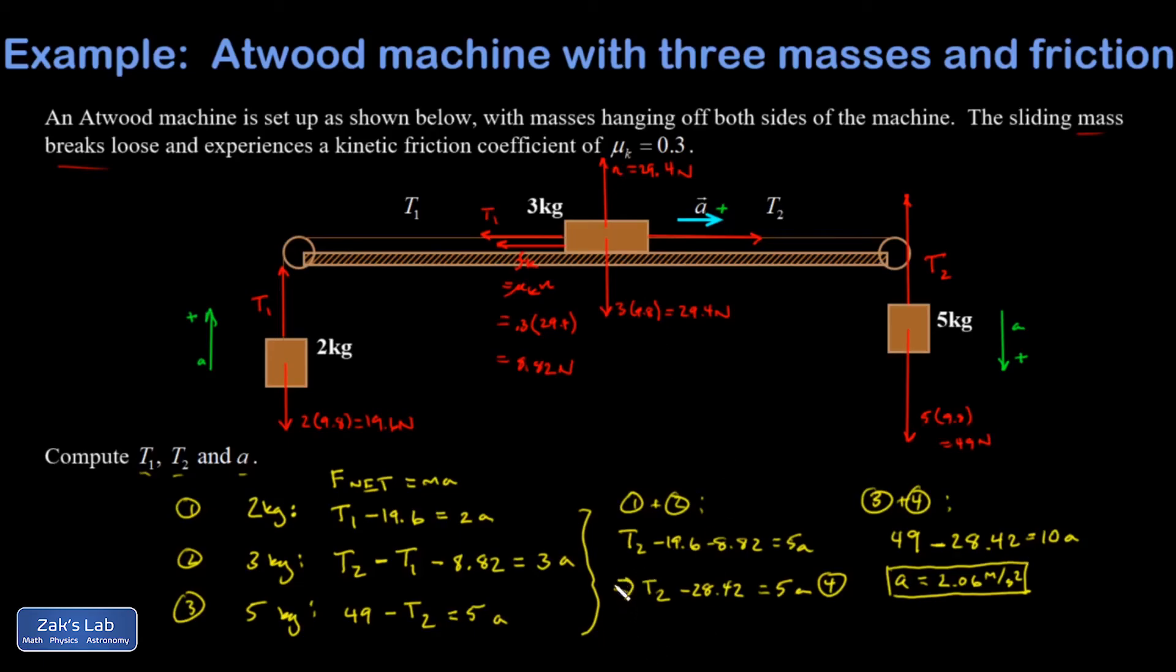All right then I can go back to all these other equations that I started with, sub in the a, and figure out what my other unknowns are. So I'll start by going into equation one that's up here and I'll solve for T1. I'm going to go ahead and draw a line here just so we don't get too tangled up.